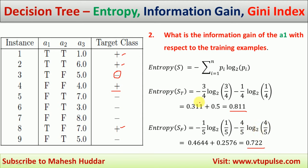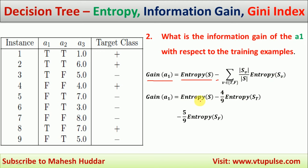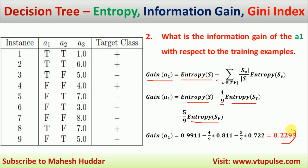Now, using these two and the entropy of the full data set, we can calculate the information gain of A1. The gain of A1 is equivalent to the entropy of the full data set minus the entropy of individual data sets multiplied by their proportionate values — that is, proportionate true examples multiplied by entropy of true examples, plus proportionate false examples multiplied by entropy of false examples. Putting all the values in this equation, the information gain is equivalent to 0.2295.